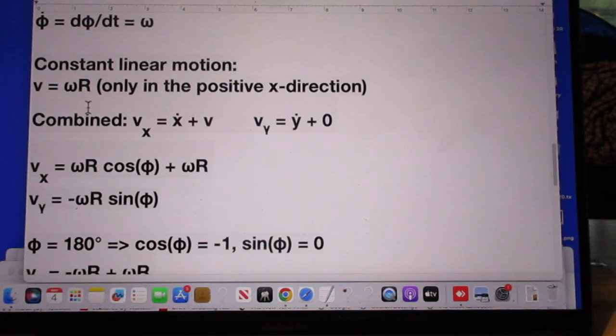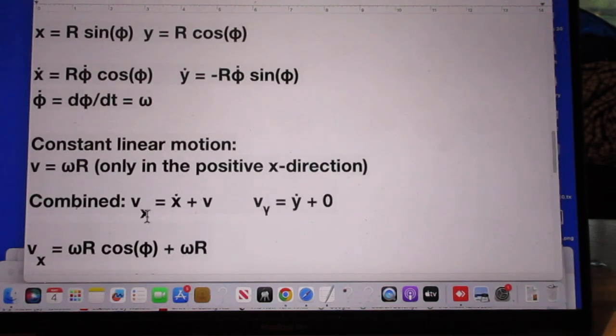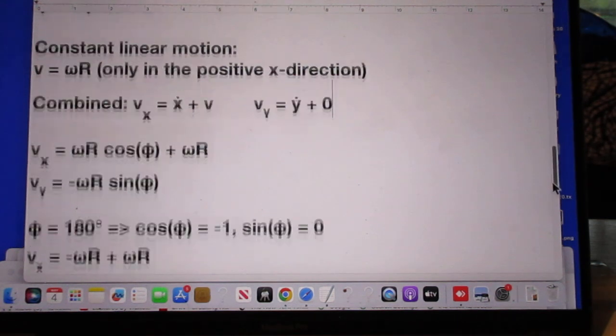V is omega r, only in the positive x direction. So the total V must be the velocity of the center of mass, which in the x direction is this V, plus the one that is due to the rotation. That's this one. And so Vx is this x dot plus omega r. And Vy is this y dot, but there is no motion in the y direction of the center of mass, so that is plus zero.